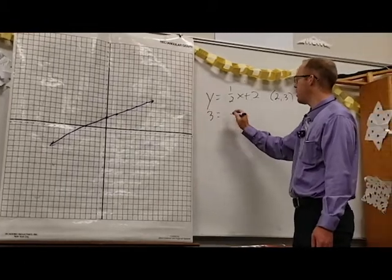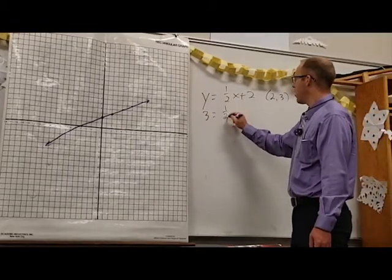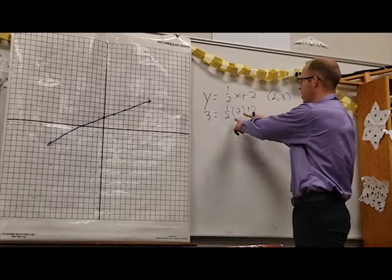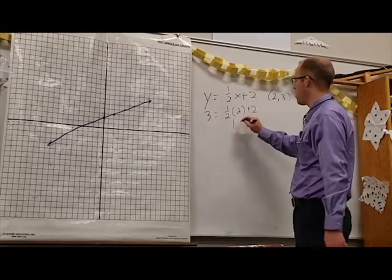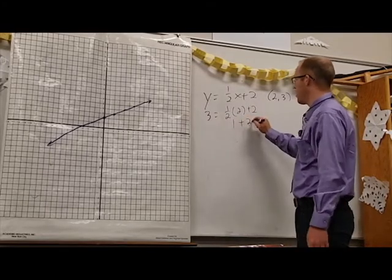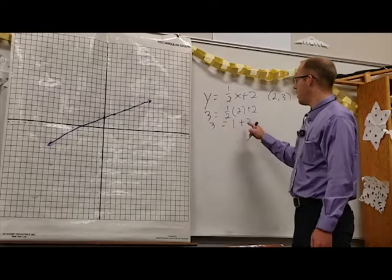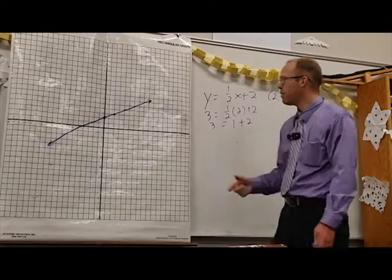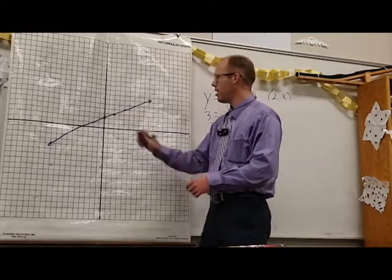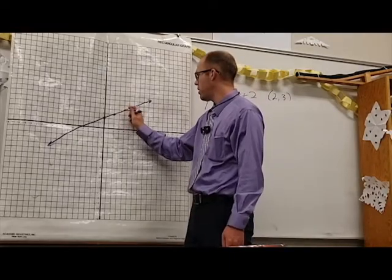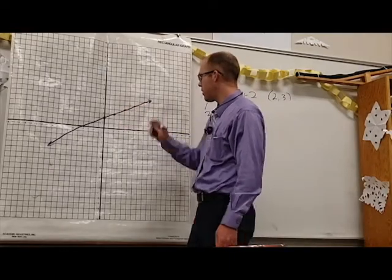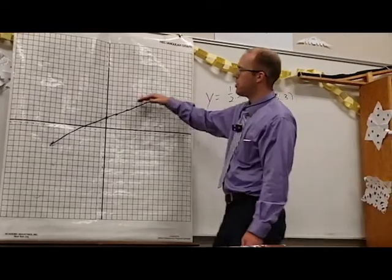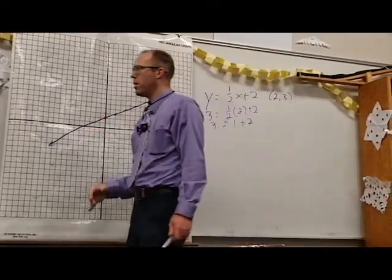So my y value is three, one-half times my x value of two, plus two. One-half times two is one, so we get one plus two on that side, and one plus two indeed does equal three. If we pick any point along this line, even the in-between points that are hard to find, it will work. This is just a picture of all of our solutions.